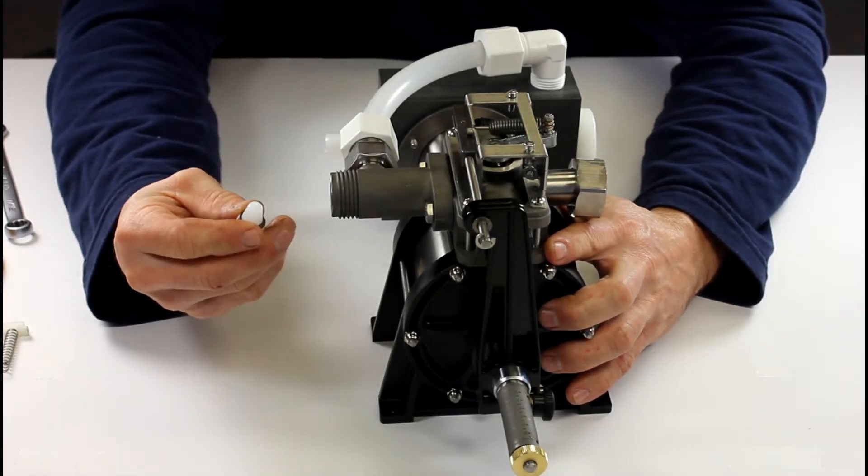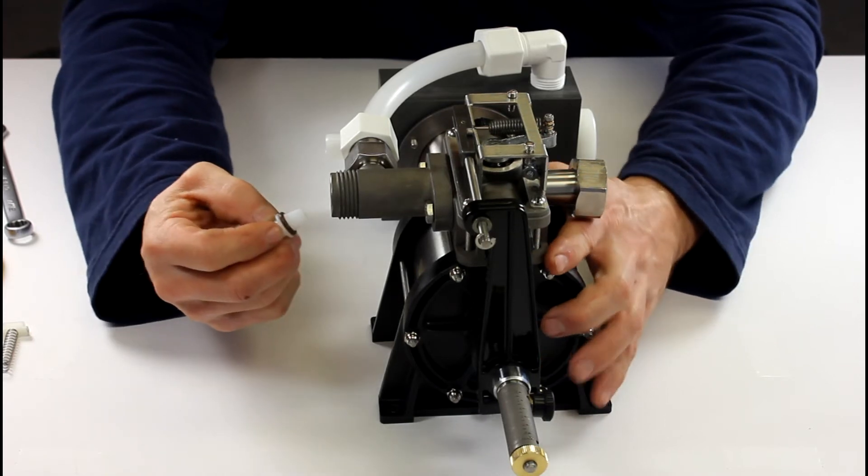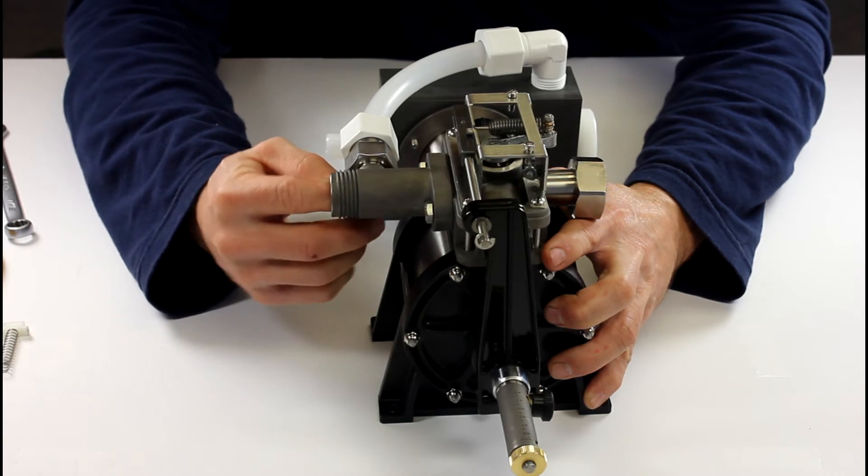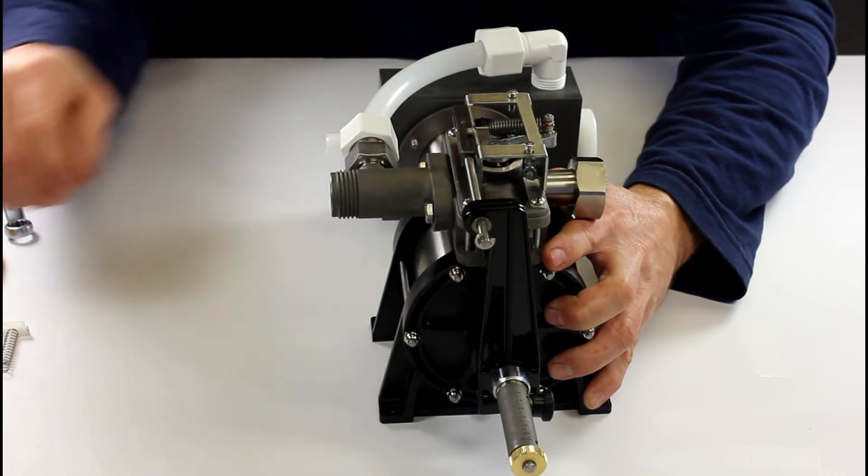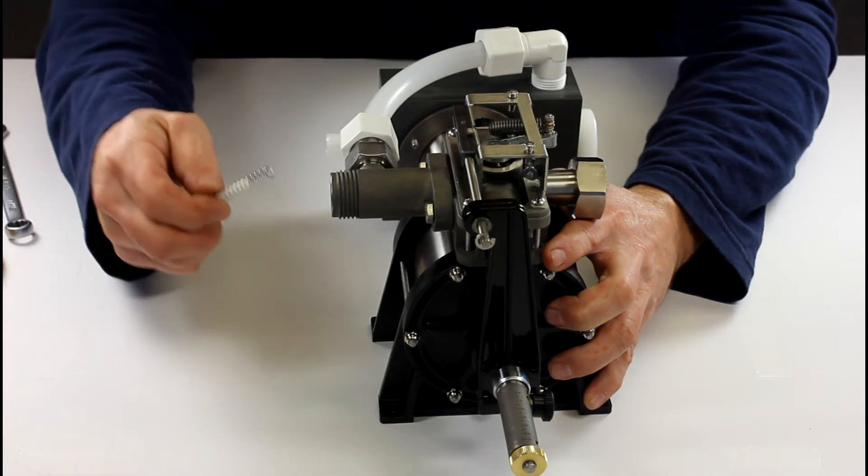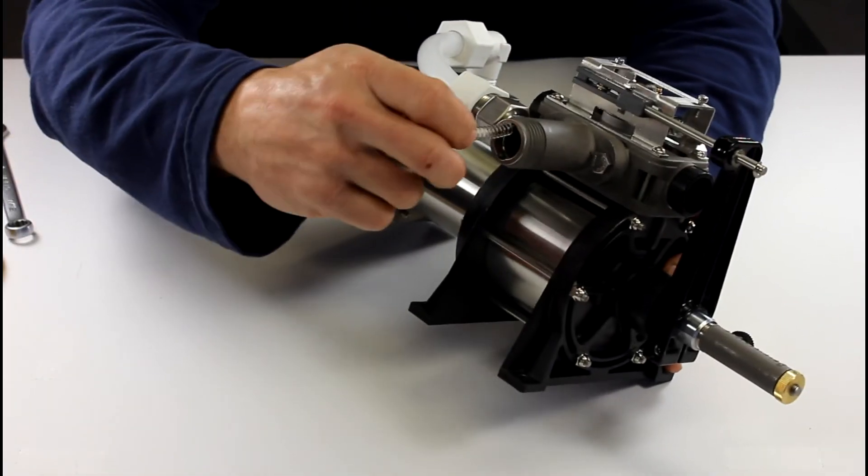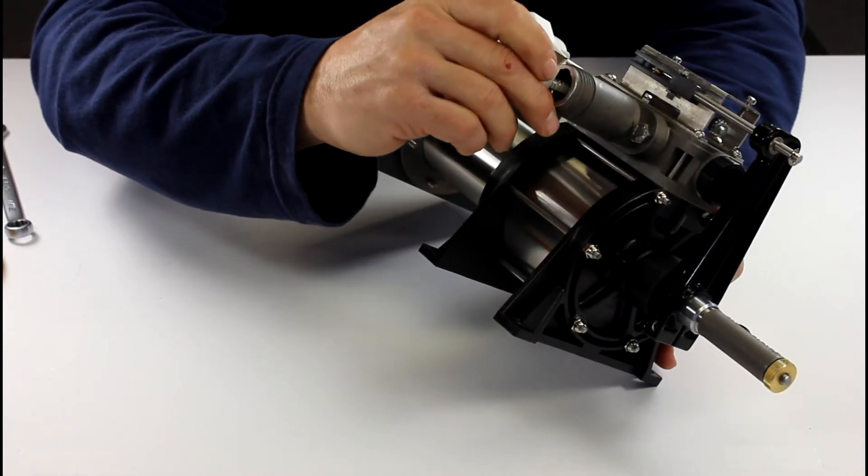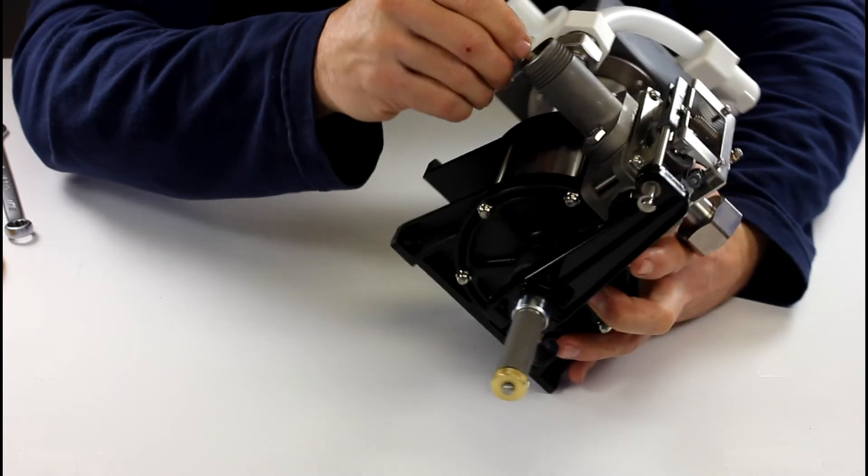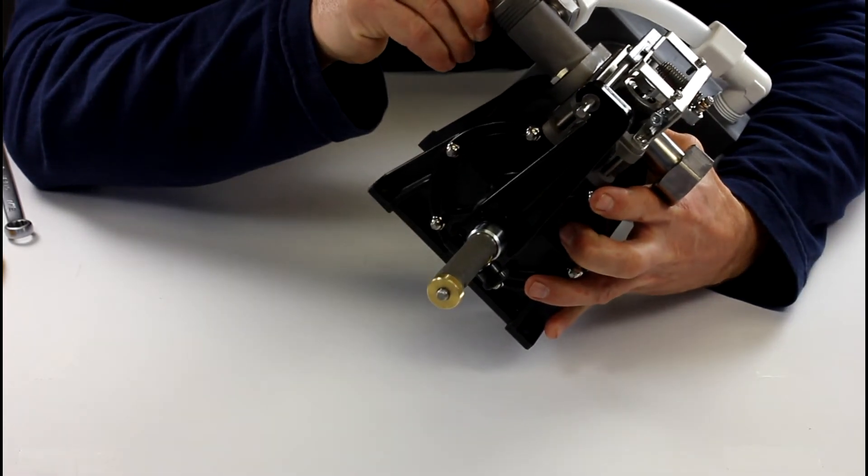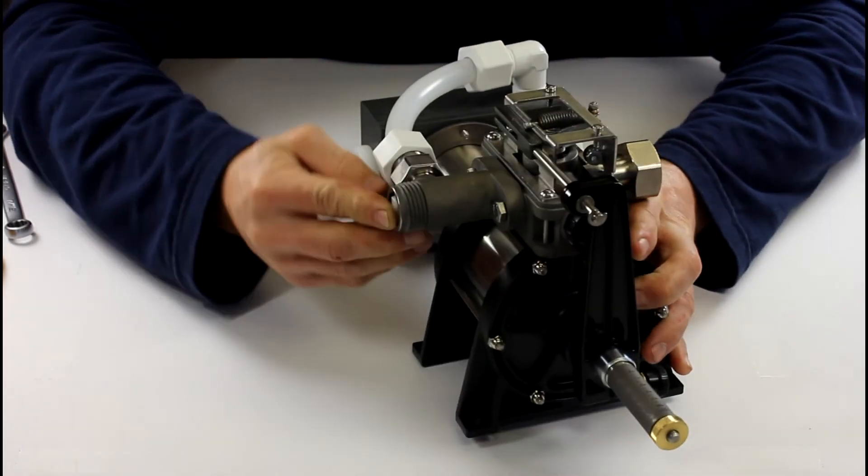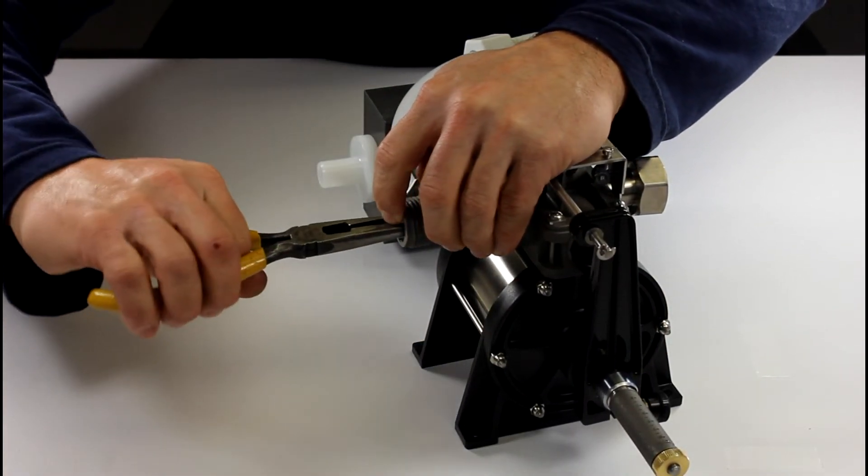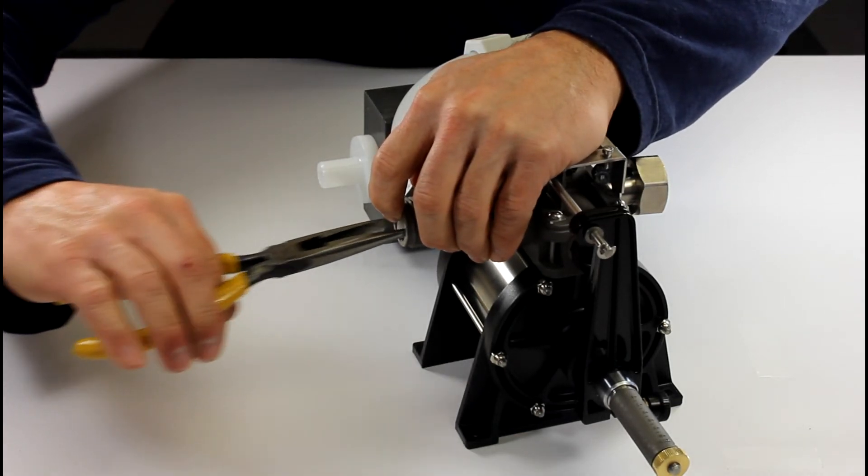So now you're going to want to put your poppet back into your outlet fitting. That poppet will go all the way down towards the bottom. You want to take your spring and your tee, you want to slide it in there, get it into your poppet, make sure it's in. Pop it.